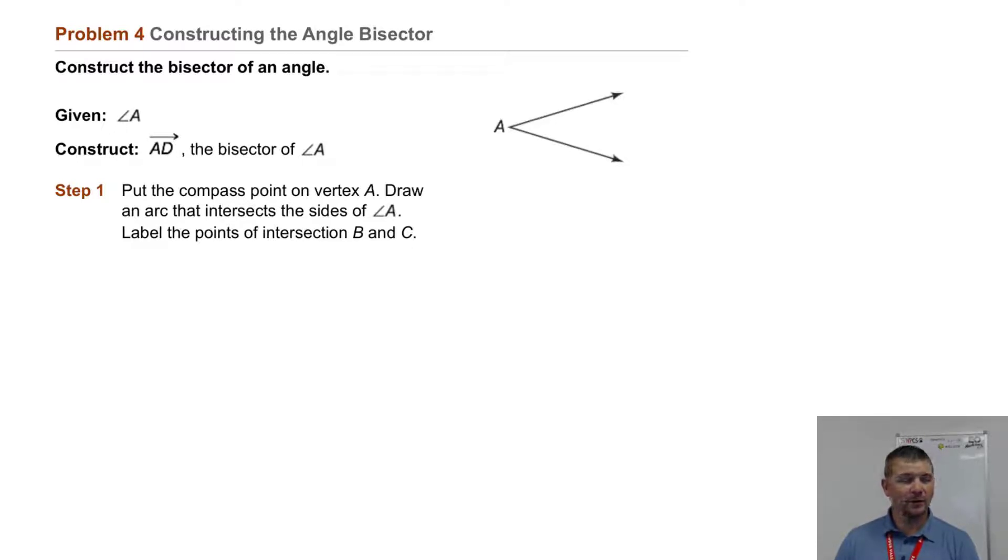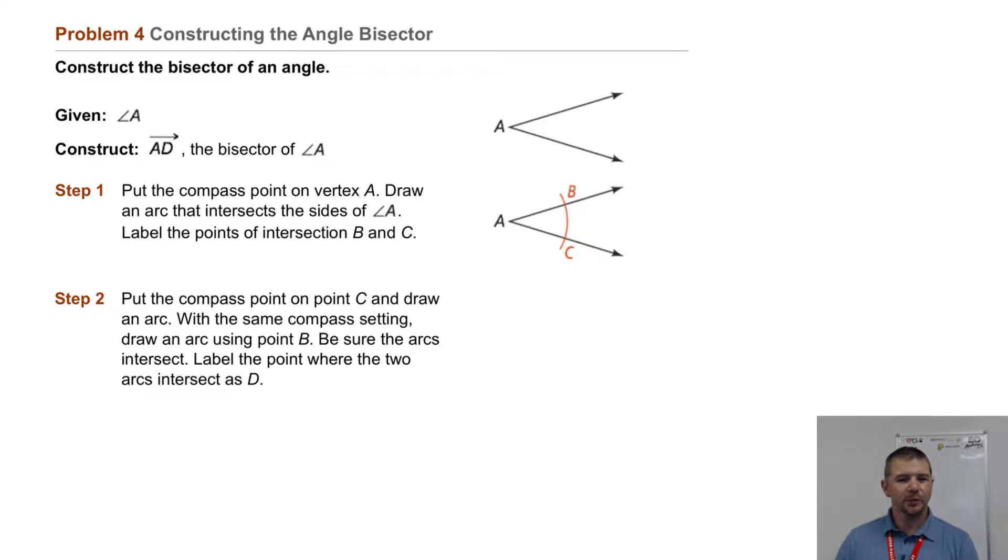Label the points of intersection B and C. Step 2: Put the compass point on point C and draw an arc.